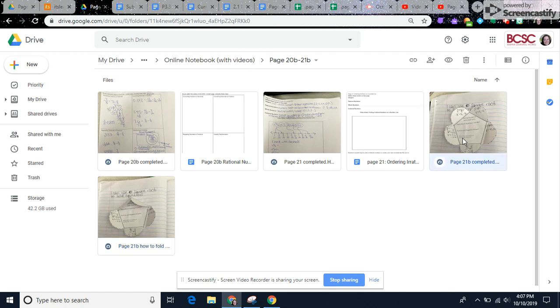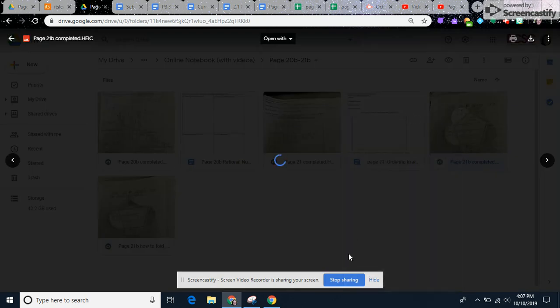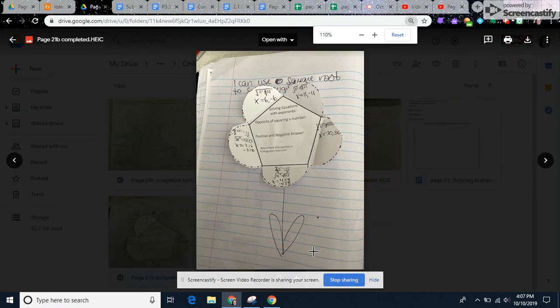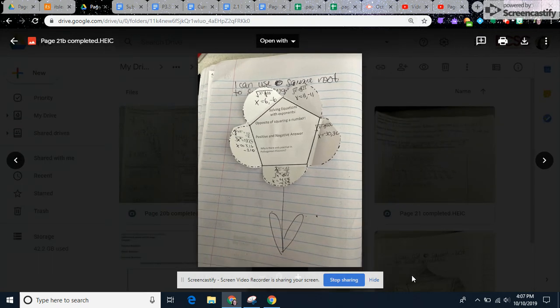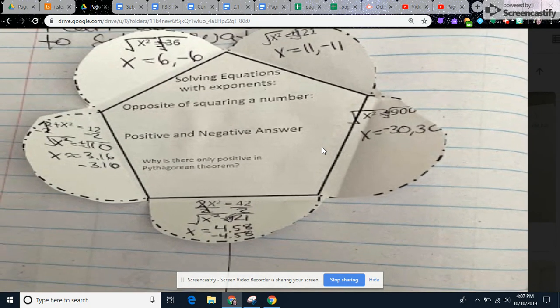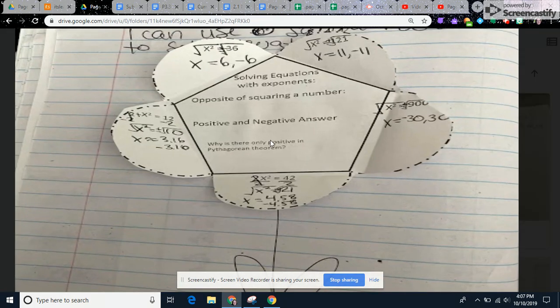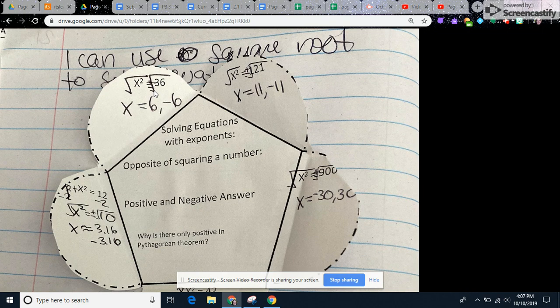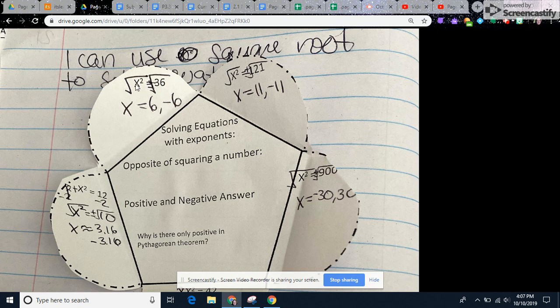Here are the notes where you can actually see them. So up here, if you have x squared equals 36, what you have to do when you're solving an equation is you have to do the opposite to both sides.